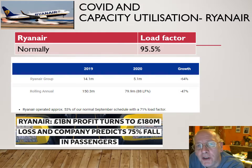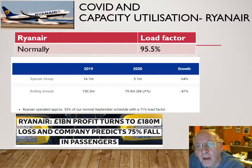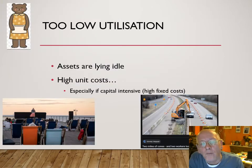The implications for Ryanair's profits: as of November 2020, the previous year they had made a one billion pound profit, but as a result of COVID they made a 180 million pound loss. They were predicting this to continue long-term and were looking at ways of downsizing to deal with that situation.